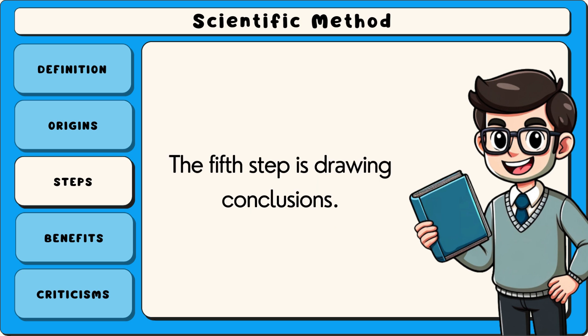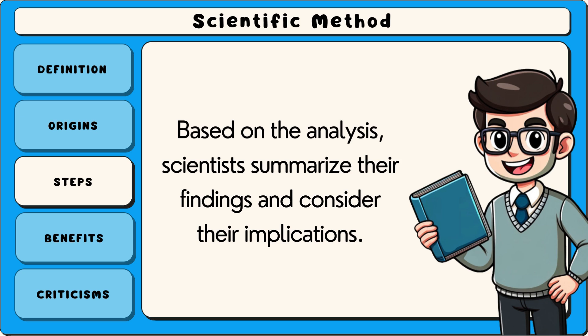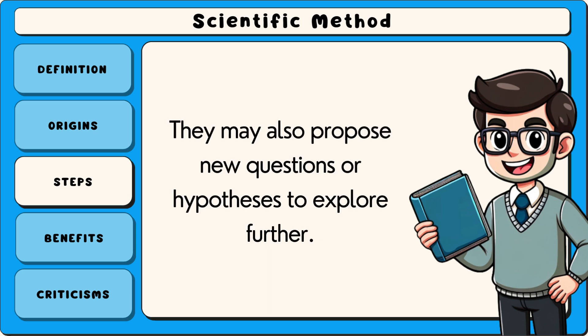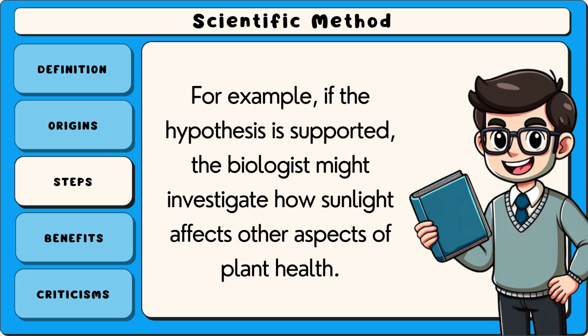The fifth step is drawing conclusions. Based on the analysis, scientists summarize their findings and consider their implications. They may also propose new questions or hypotheses to explore further. For example, if the hypothesis is supported, the biologist might investigate how sunlight affects other aspects of plant health.